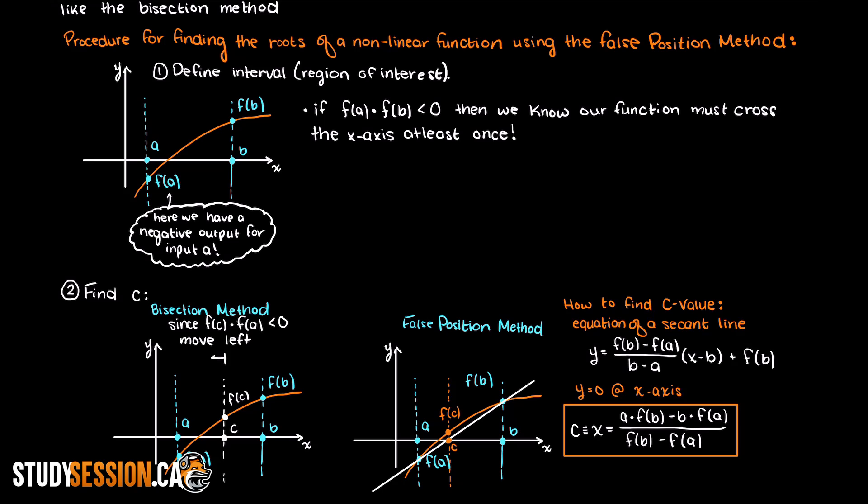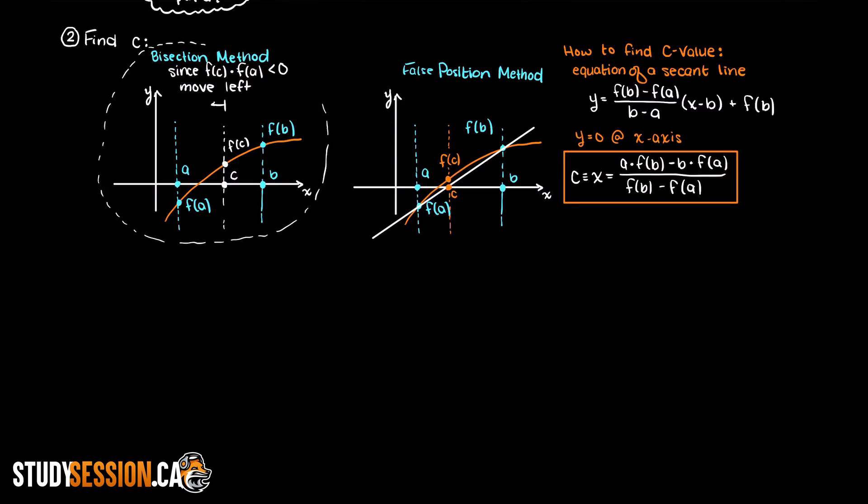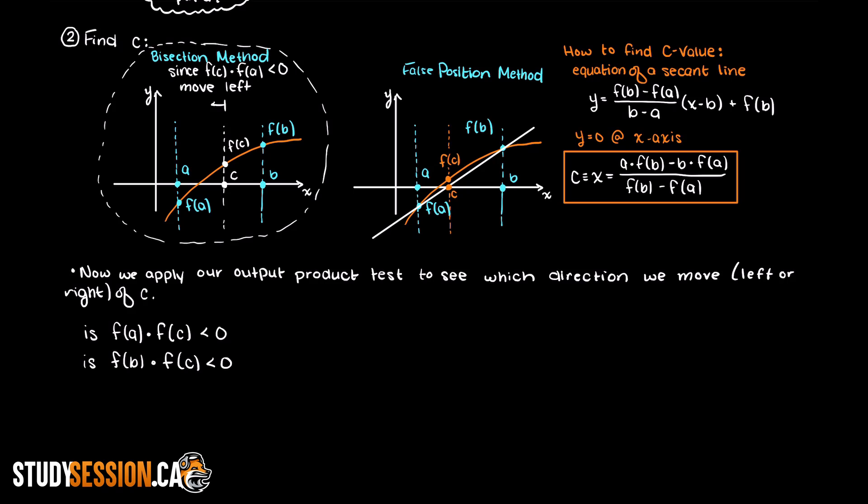Now we can apply our output product test. This means that we take the output of input a times the output of input c and see if the product of these two values is less than zero. If so, that ensures that our root is to the left of our midpoint c.